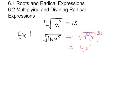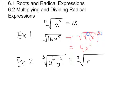The second example is the cube root of a to the sixth times b to the ninth. We rewrite that as the cube root of a squared to the third, times b cubed to the third. Based on the property stated earlier, the cube root of a squared to the third is a squared, and the cube root of b cubed to the third is b cubed.